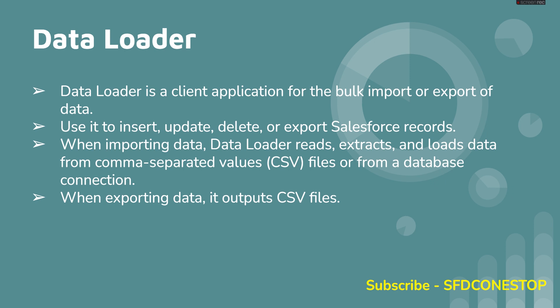The data loader is mainly used to load or insert 50,000 to 5 million records. If you want to import or export data into an object that is not supported by the import wizard, then you will be using the data loader. If you wanted to do some kind of backup, you can do it using the export feature. By default, data loader uses the SOAP based API — this is a common interview question. If you want to change from SOAP API to the bulk API, you can do it from the settings. The bulk API is faster compared to the SOAP based API.